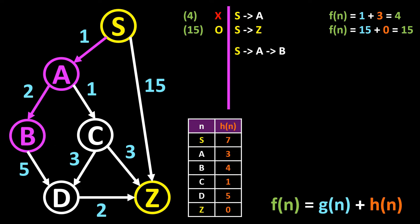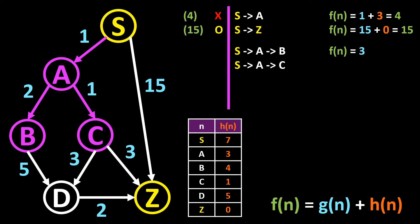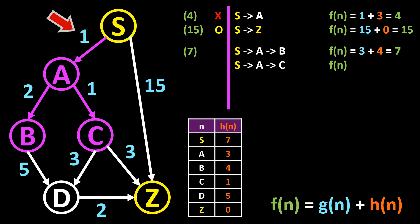From A we can reach B and C. We first calculate F of N for the path from S to A to B. We calculate 1 plus 2 and get 3, then add the estimated cost from B to the destination — in this case 4. The result is 7, which we note down in front of this path. Now we calculate F of N for the path from S to A to C. We calculate 1 plus 1 and get 2, then add the estimated cost from C to the destination — in this case 1. The result is 3, which we note down in front of this path.